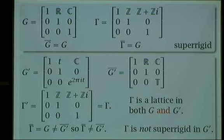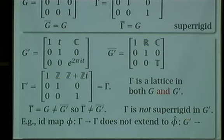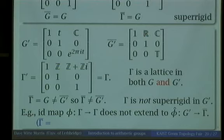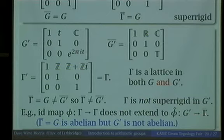In fact, we can prove it. It's obvious that Gamma is not superrigid in G', because we just take the identity map from Gamma to Gamma — that's a homomorphism from Gamma into a group of matrices. That simply does not extend to a homomorphism defined on G' that maps to the Zariski closure of Gamma. Remember, the Zariski closure of Gamma is G, which is R3 — it's abelian. But G' has matrices that do not commute with each other. There's no way to map a non-abelian group inside an abelian group. So there's no extension.